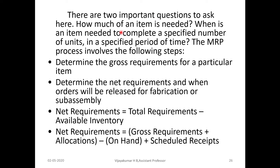There are two important questions related to MRP: how much of an item is needed, and when an item is needed to complete a specified number of units in a specified period of time. The MRP process involves the following steps. First, we calculate the gross requirements for particular items — what are the gross requirements in raw materials. Then we determine the net requirements and when orders will be released for fabrication or sub-assemblies.